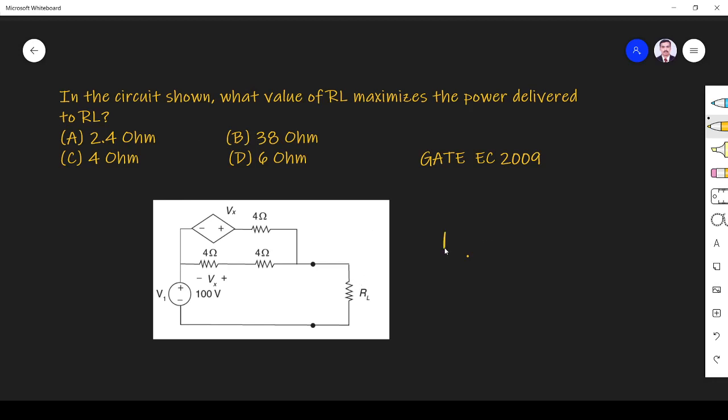We know the maximum power is delivered to RL when RL is equal to R-thevenin as per maximum power transfer theorem. So we have to find R-thevenin. But here you see the circuit has a dependent source.